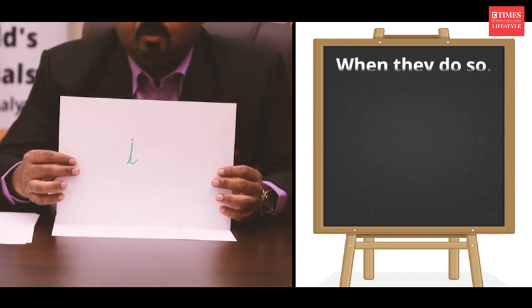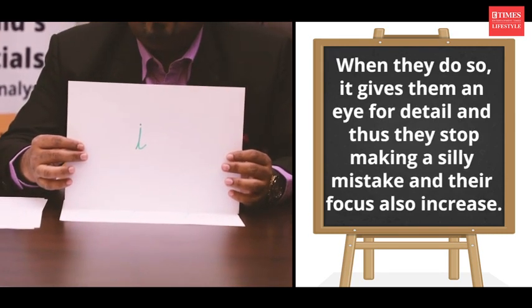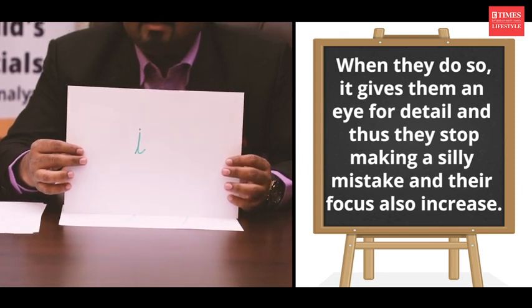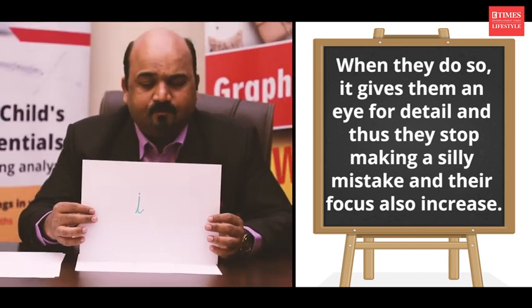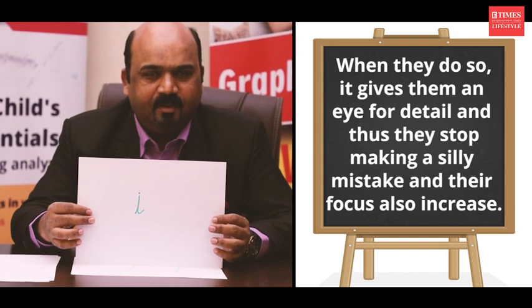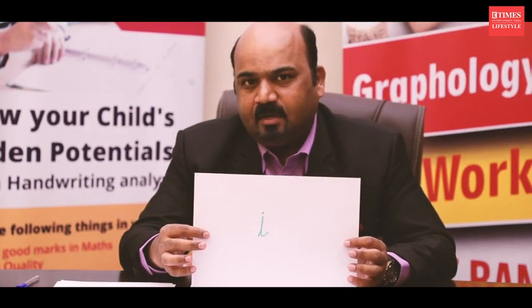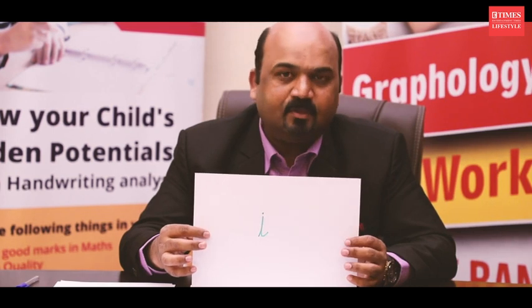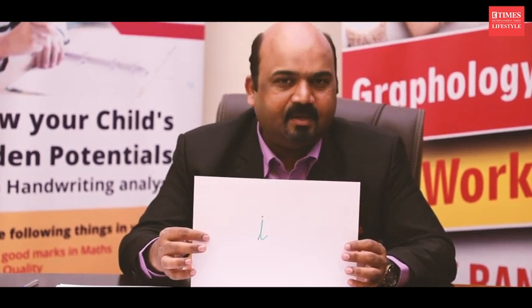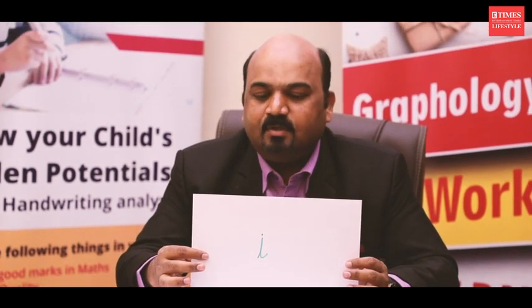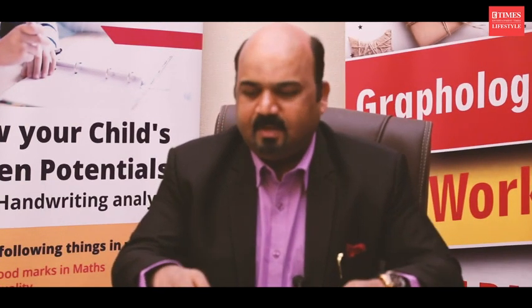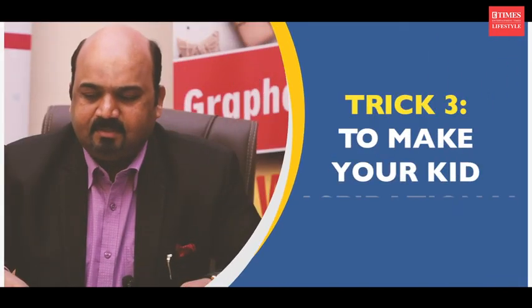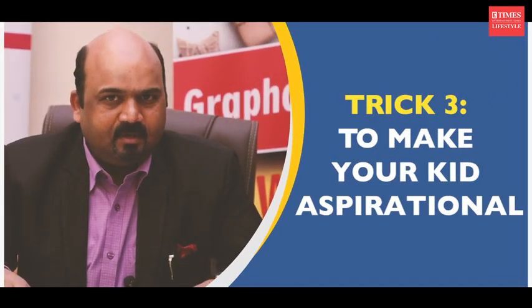If the dot on the 'i' is very close to the stem, that means the person will have a good eye for detail — his observation skills, his ability to concentrate, his ability to read between the lines, and even simple focus will be very good. Check your children's 'i' dotting. If the dot is at the top, or behind or ahead of the stem, that is not a good sign. Tell the child to place the dot exactly on the 'i' stem and you will see his focus and eye for detail increase.